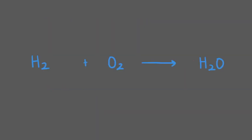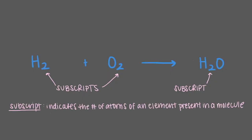In a chemical equation, there are two types of numbers to pay attention to. The first type are the subscripts — the small number within a chemical formula. This indicates the number of atoms of an element that are present in a molecule. A subscript is specific to a chemical formula and may not be changed.